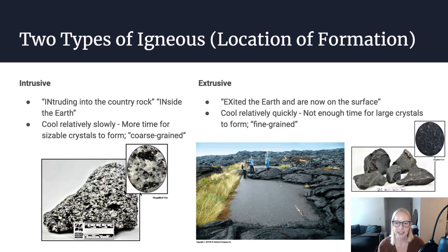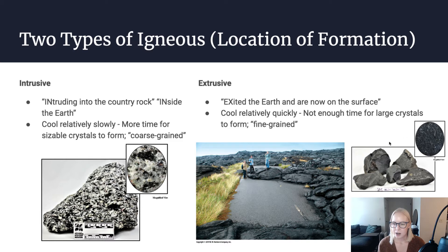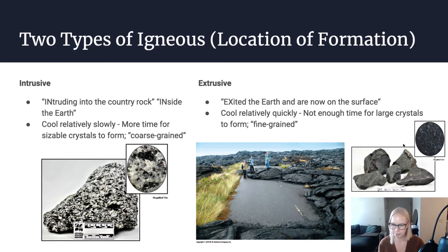Extrusive igneous rocks, on the other hand, have exited the earth and are now at the surface. Comparatively, these cool quickly, so there's not a lot of time for large crystals to develop. We typically call these fine-grained rocks — rocks where you can't see individual crystals. The crystals are there, but they're just very small. Here are a few samples of basalt. If I were to take a sample of basalt and hold it up to my eye, I wouldn't be able to identify the individual crystals. In this photo, you can see basalt that has overrun a road in Hawaii, where we get a lot of these effusive extrusive igneous eruptions.